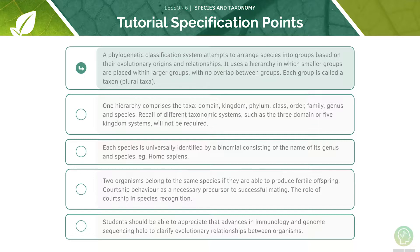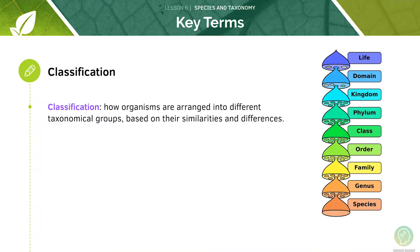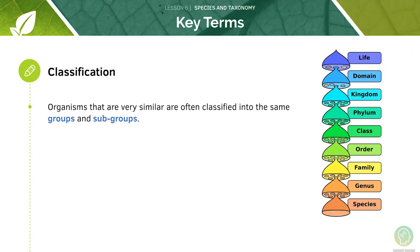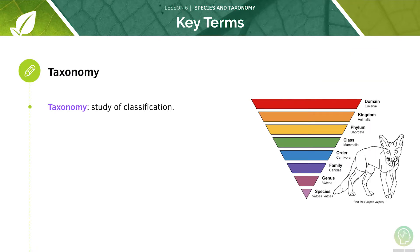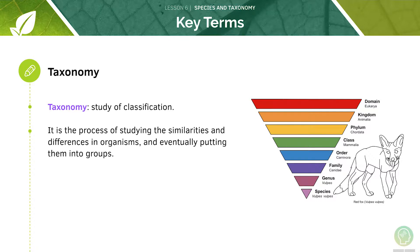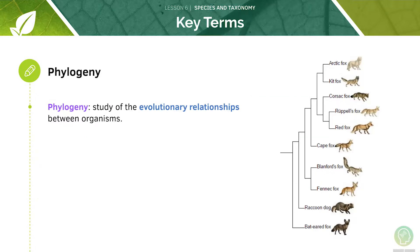The first specification point is to look at the phylogenetic classification system. Classification is how organisms are arranged into different taxonomical groups based on their similarities and differences. Organisms that are very similar are often classified into the same groups and subgroups. Taxonomy is the study of classification — it refers to the actual process of studying the similarities and differences in organisms, eventually putting them into groups. Taxonomy takes into account many things including the physical appearance of organisms, the anatomy, genetics and physiology. More recently a technique called phylogeny has been used, which is the study of evolutionary relationships between organisms.